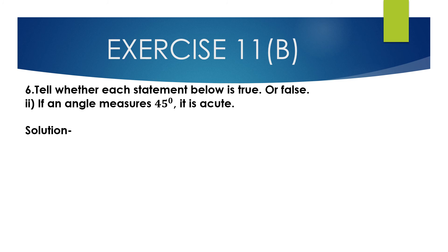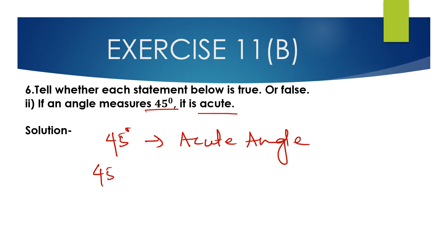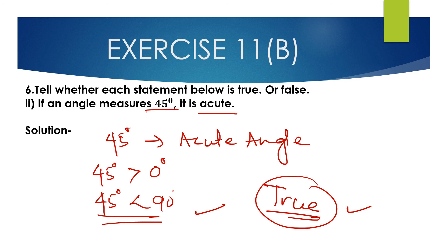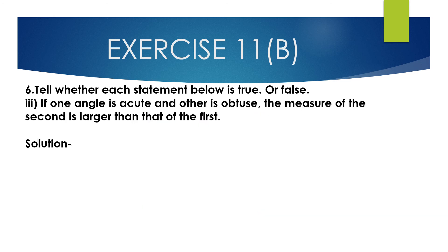Second bit: 'If an angle measures 45 degrees, it is acute.' We know that an angle which is more than 0 degrees but less than 90 degrees is an acute angle. Since 45 degrees is more than 0 and less than 90, this statement is true.